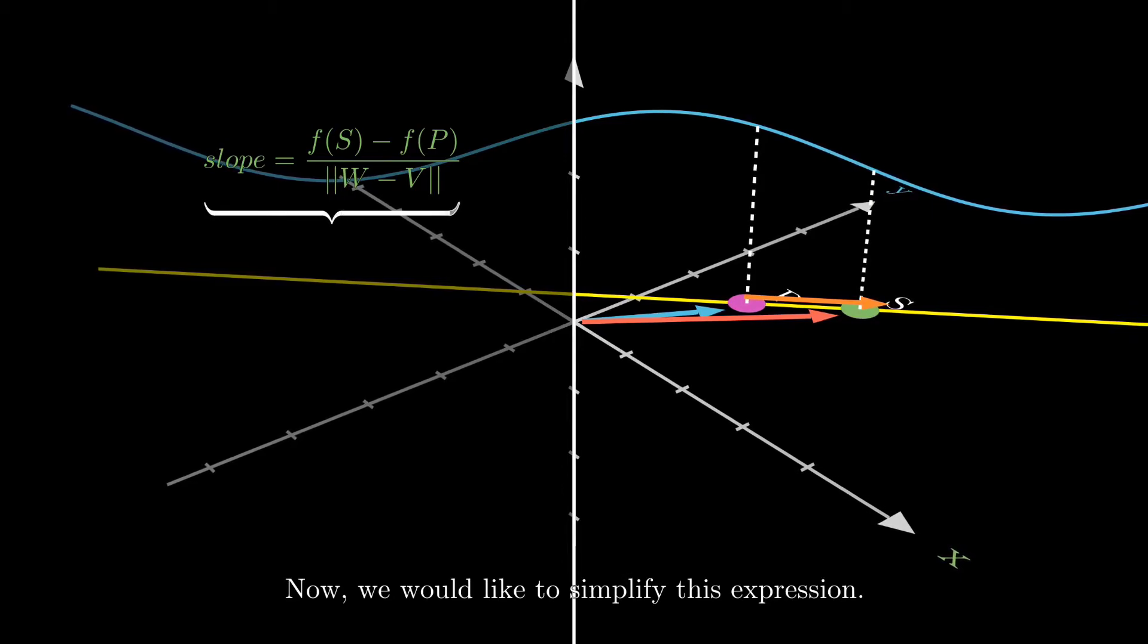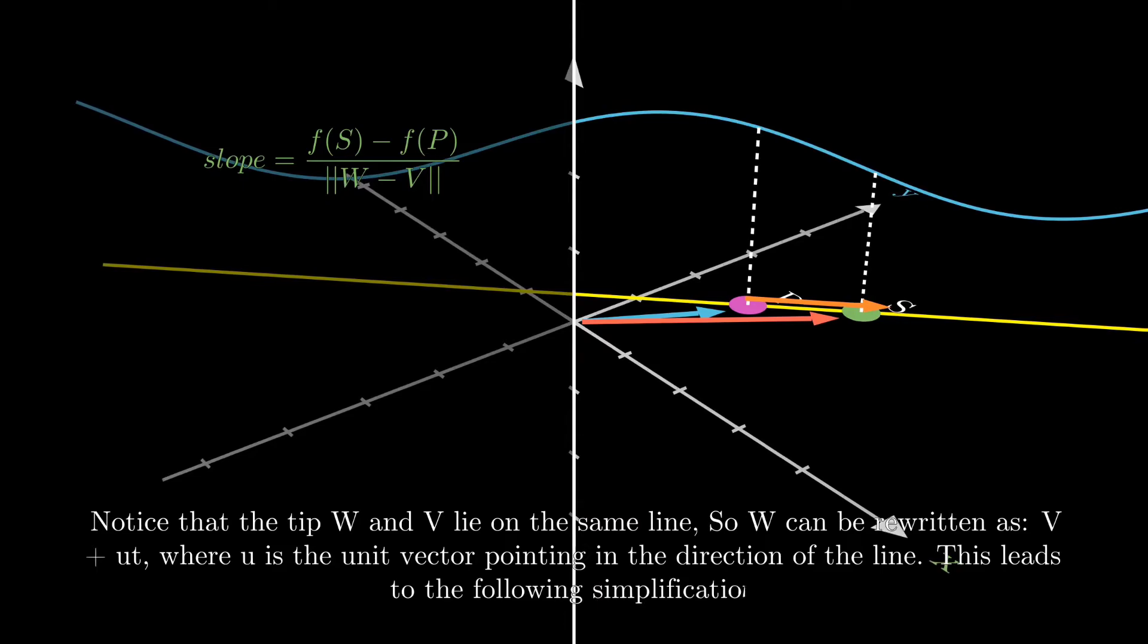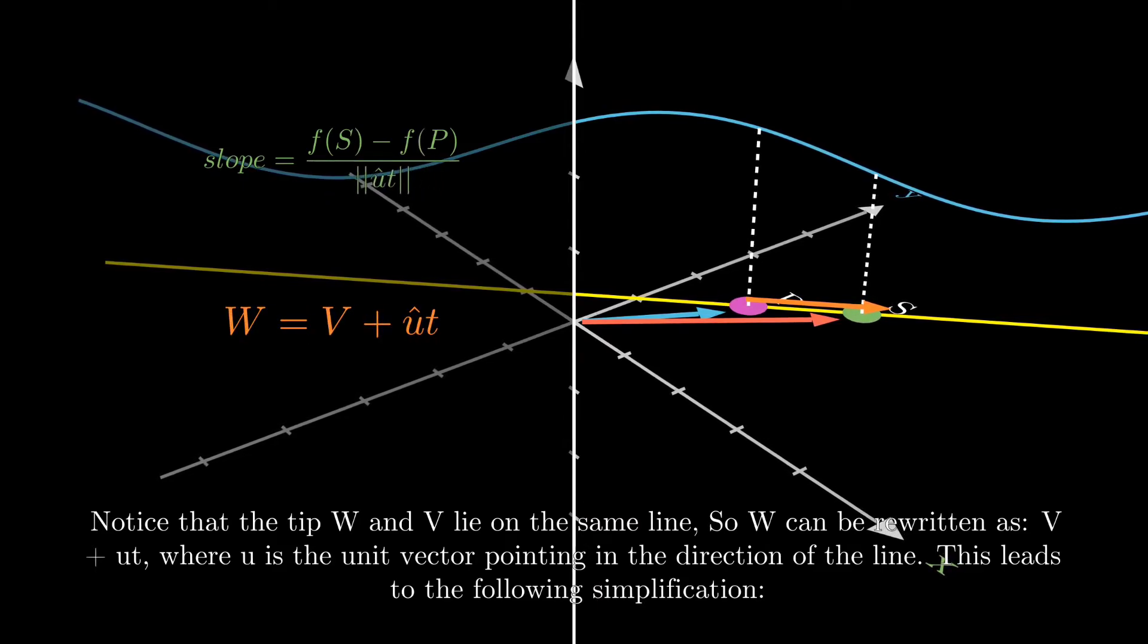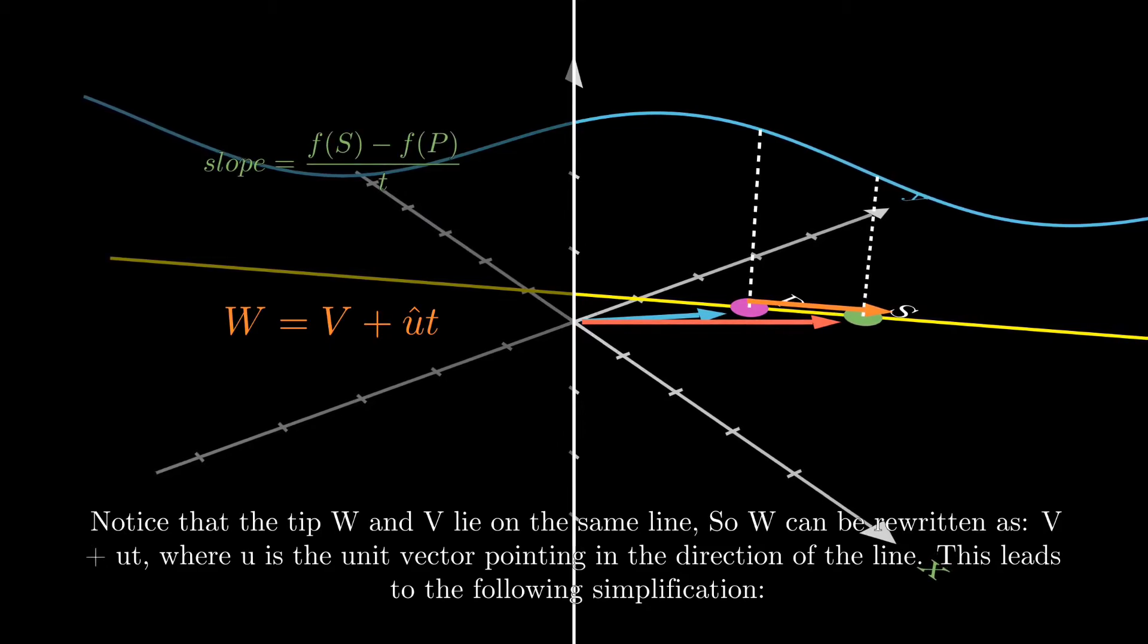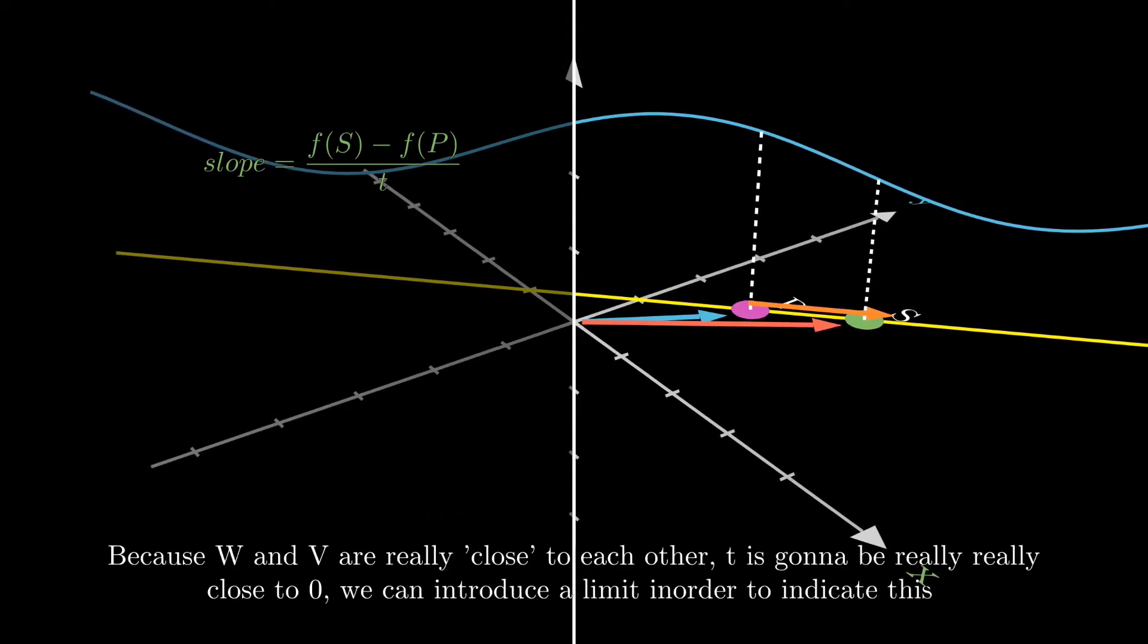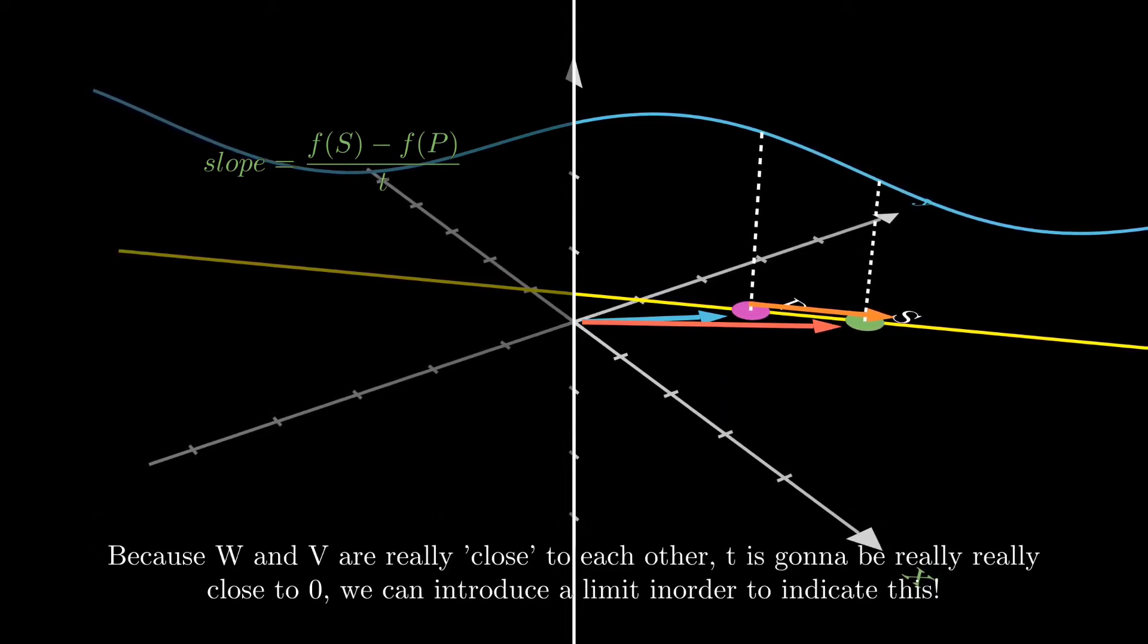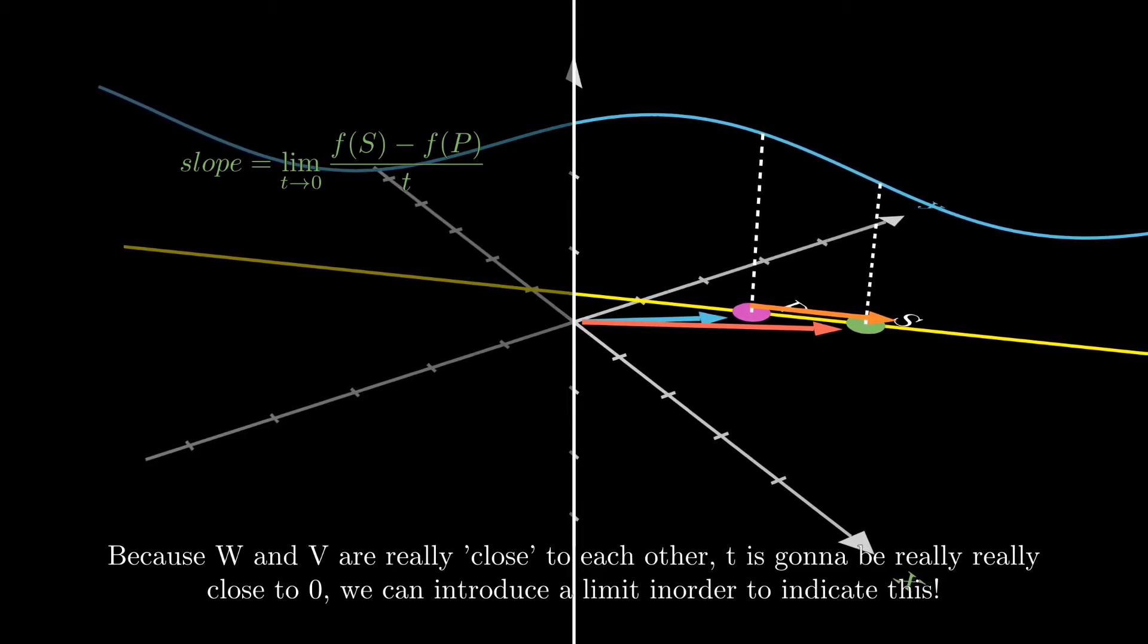Now, we are going to simplify this expression. Notice that the tip of both V and W lie on the same line. So W can be written as V plus U times T. Because W and V are really close to each other, T is going to be really close to zero. We can introduce a limit to indicate this.